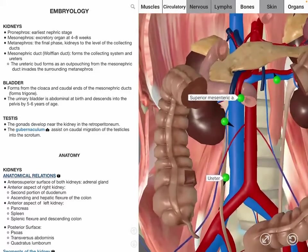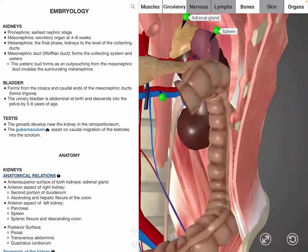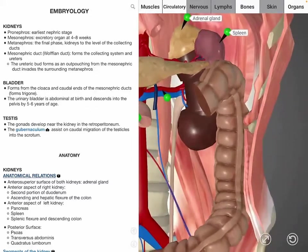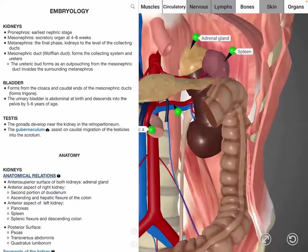The pancreas, spleen, and descending and splenic flexure of the colon lie anterior to the left kidney. And posterior to the kidneys lie the psoas and quadratus lumborum muscles.